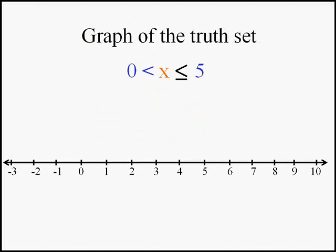So the graph of the truth set of this conjunction, it's called, x is greater than 0 and simultaneously less than or equal to 5 is going to be, I want to call it a barbell. It's going to look like that. Note that there's a circle on the 0 because we don't want to include that and there's a solid dot on the 5 because we do want to include that. Very important.